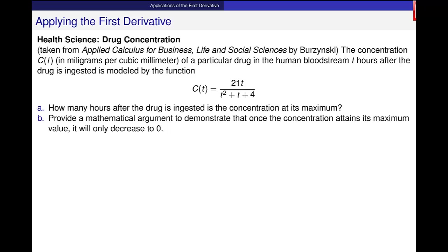It says the concentration C(t) in milligrams per cubic meter of a particular drug in the human bloodstream t hours after the drug is ingested is modeled by this function, which is 21t divided by, in the denominator, t squared plus t plus 4. Part A says, how many hours after the drug is ingested is the concentration at its maximum? So I want to know when the concentration is maximum.